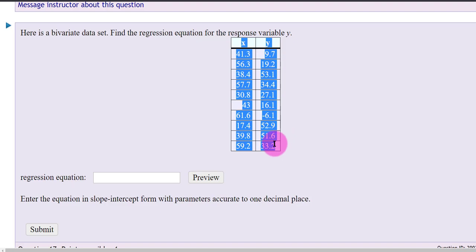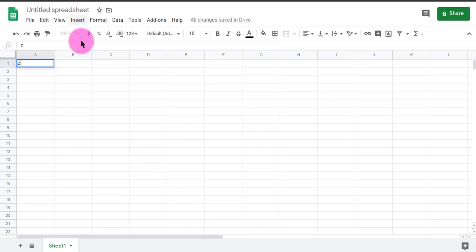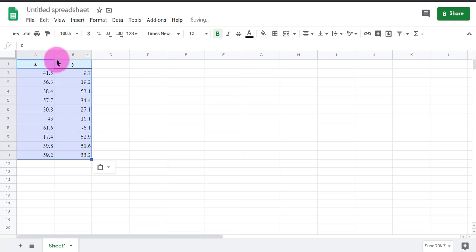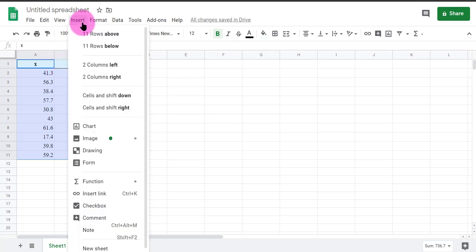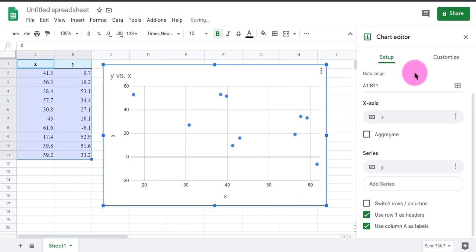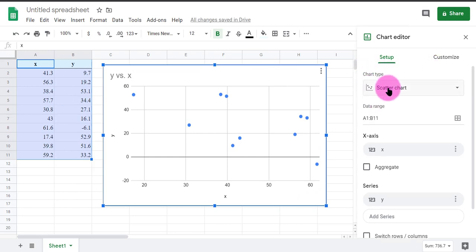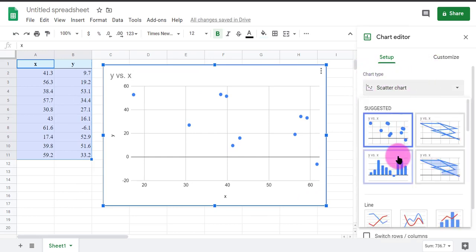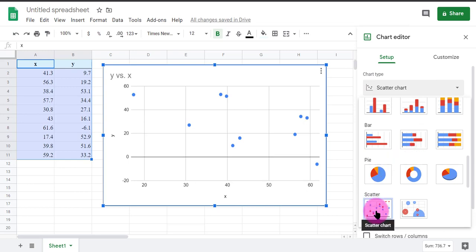I'm going to copy and paste into Google Sheets. We're going to insert a chart that is a scatterplot. Sometimes it defaults to scatterplot, but if it doesn't, over here under chart type, you can go select scatter from one of the options.